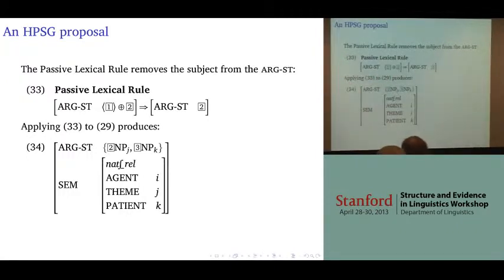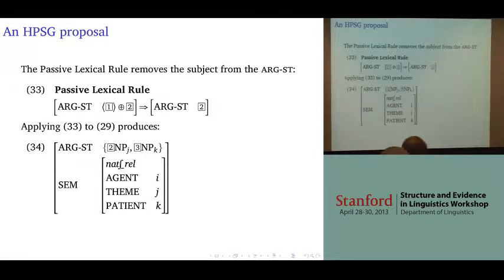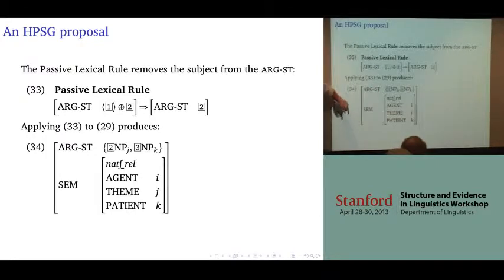Because there may be more than one possibility for this, if we apply this to the lexical entry for the verb 'to give,' when we wind up with a structure where there are two objects,